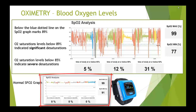This graph is highly indicative of somebody who has sleep apnea. The smaller graph below it is what a normal SpO2 graph would look like, just so you have the context — this is a dramatic case of severe oxygen desaturations.